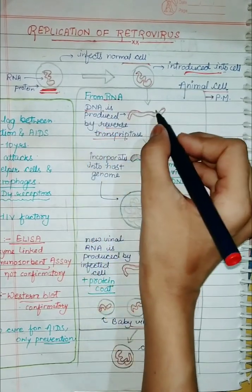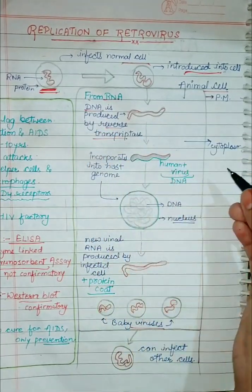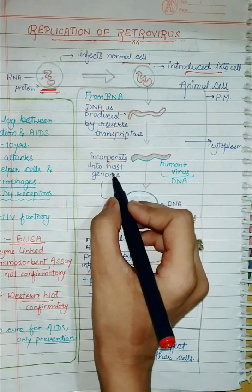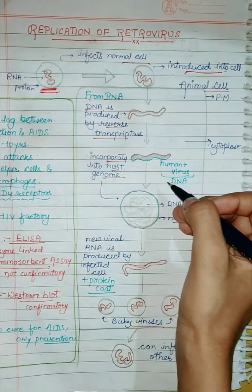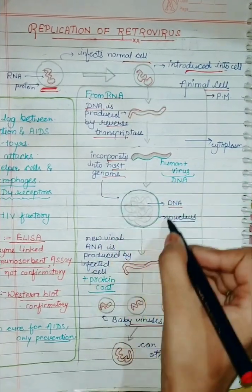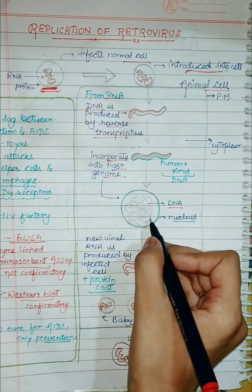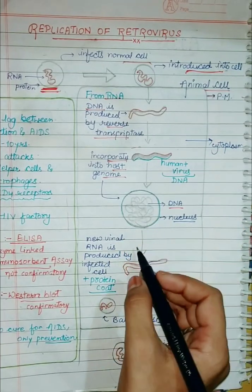It will convert RNA to DNA using reverse transcriptase. Then, it will incorporate into the host genome — that is, it incorporates with the human DNA, which is the host genome.